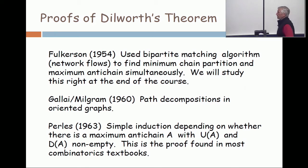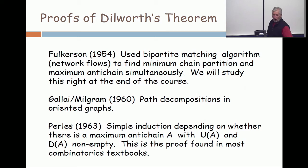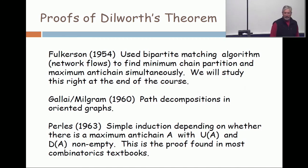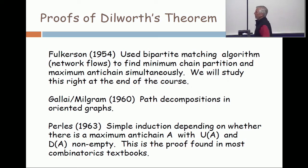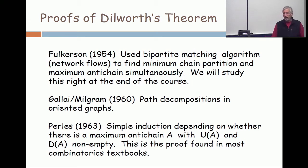A famous Hungarian named Galli, working with an English guy Milgram, published a paper in 1960 — ten years after Dilworth — in which they proved a much stronger result using path decompositions in oriented graphs. And then an Israeli, Misha Perlis, published in 1963 a very simple induction. This is the proof found in most combinatorics textbooks, and it is also the proof that I'm about to show you. So look at the dates: 1954, 1960, 1963 — and remember that Dilworth's theorem was published in 1950. These proofs can't be really hard because Dilworth's own proof was only one page.